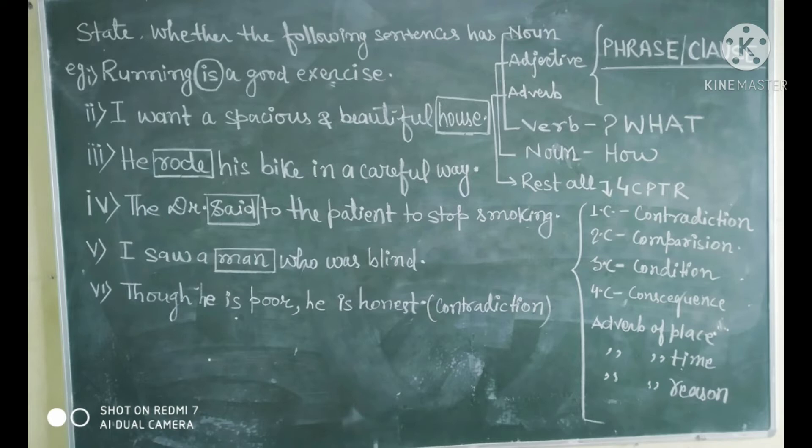Now, come to the next sentence. I want a spacious and beautiful house. Yaha pere spacious and beautiful, it is qualifying the noun house. So spacious and beautiful house becomes your adjective phrase.